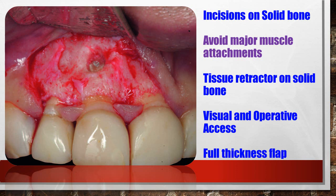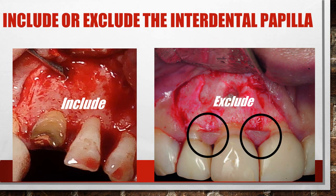You have to avoid major muscle attachments: if the incision involves a muscle, it will be very difficult to re-approximate the tissue for suturing and will delay healing. The tissue retractor must rest on solid bone — if it rests only on soft tissue it will damage the soft tissue and may lead to necrosis, hampering blood supply. You must have good visual and operative access. A full thickness flap is essential — if you give a partial thickness flap, you will not have sufficient healing. The full thickness flap involves incising all the way to the bone, which aids in healing.